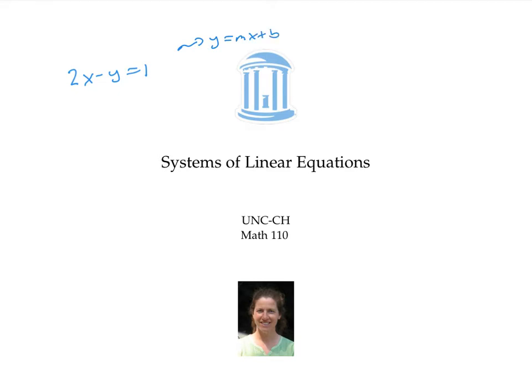A system of linear equations is a collection of two or more linear equations. For example, we could have these two equations.